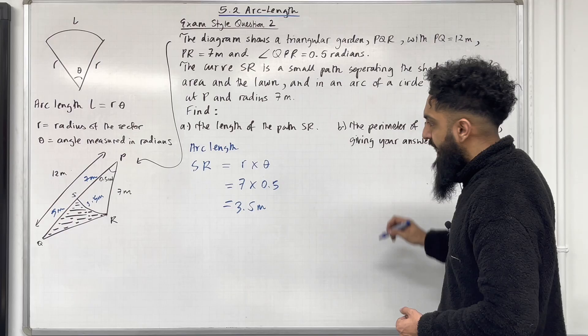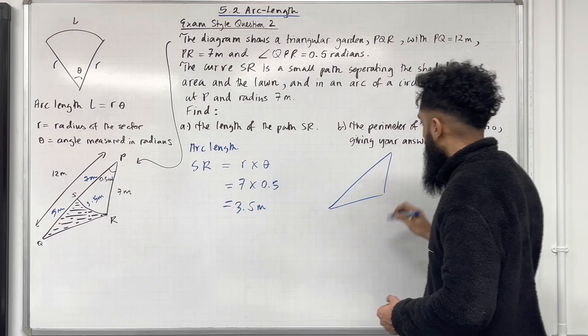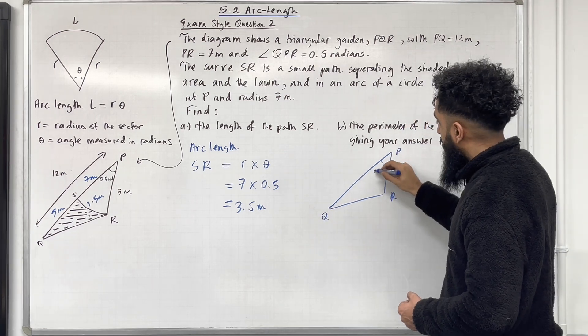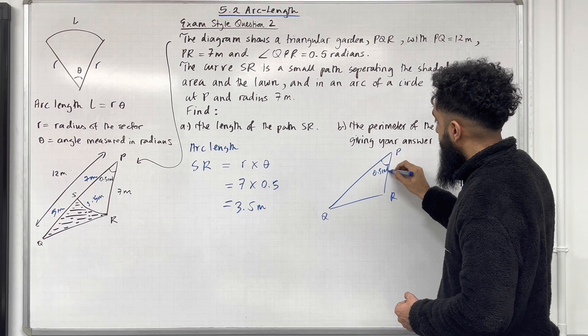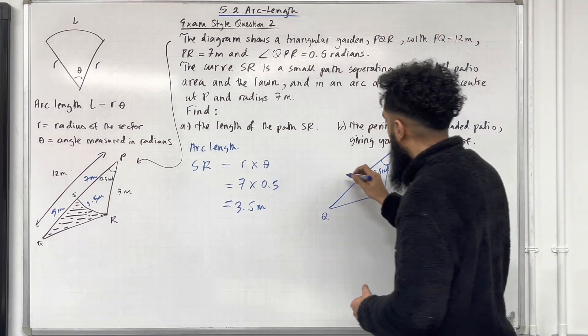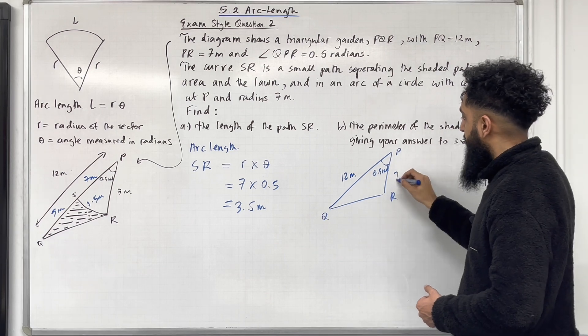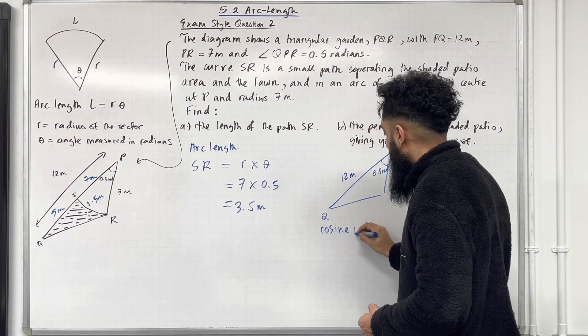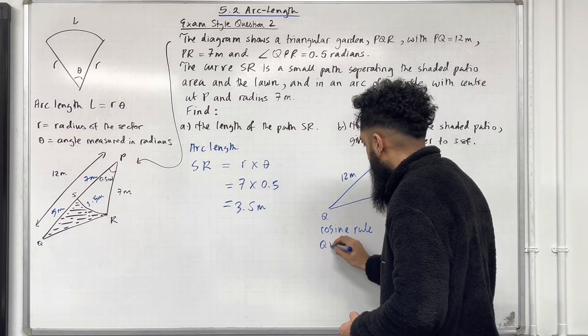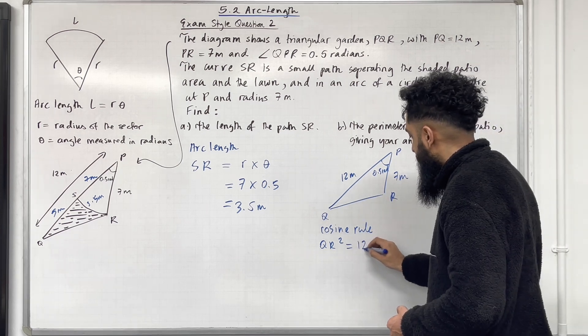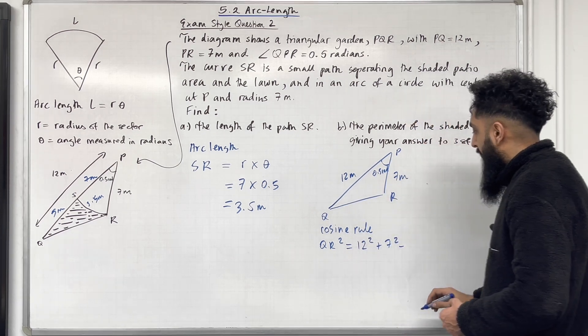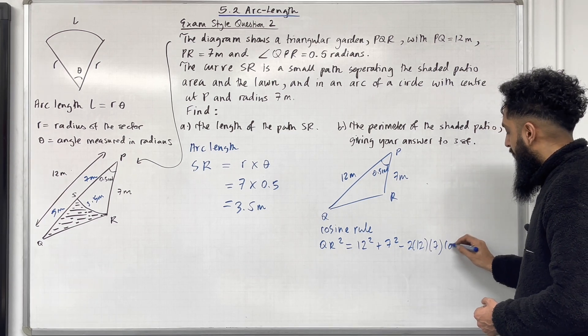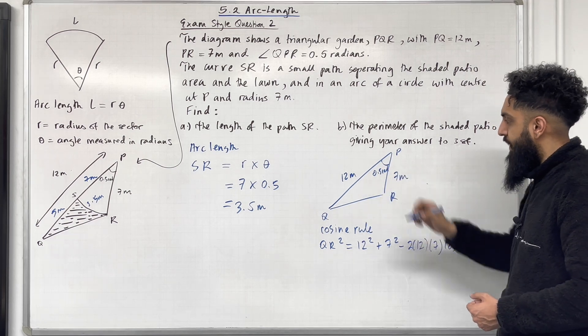So what we can do over here is form a triangle. So here is my triangle PQR, this angle is 0.5 radians, and I know that this length over here is 12 metre and this length over here 7 metre. I can work out QR using the cosine rule. So QR squared is equal 12 squared plus 7 squared minus 2 lots of 12 multiplied by 7 cos of the angle which is opposite to the side which is 0.5.